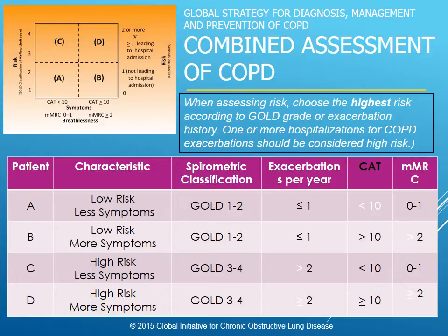Patient A is going to have low risk and less symptoms, and they're going to be a GOLD 1 to 2 category. B is low risk, more symptoms, GOLD 1 to 2. C is high risk, less symptoms, GOLD 3 to 4. And D is high risk, more symptoms, GOLD 3 to 4.